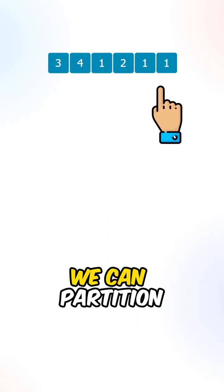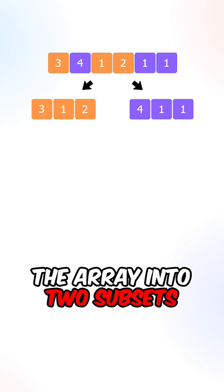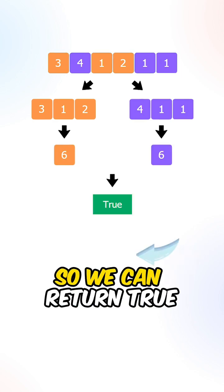Let's say we're given this array. We can partition the array into two subsets where the sums are both 6, so we can return true.